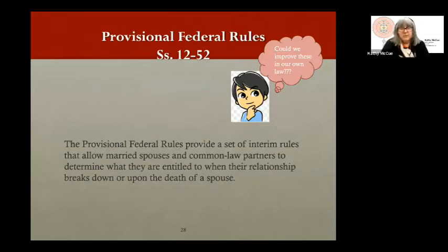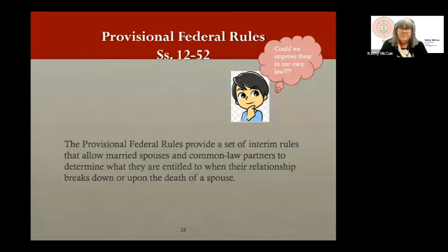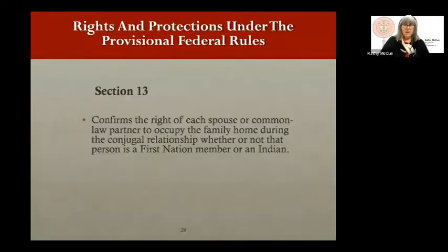The provisional federal rules are covered in sections 12 to 52 of the legislation. They provide a set of interim rules allowing spouses and common law partners to determine what rights and remedies exist for them, both on the breakdown of a relationship and on the death of a spouse. As we go through these rules, if something doesn't sit well with your tradition and culture, I'd challenge you to think about how you could make it right through the development of your own law.